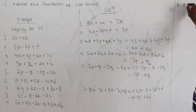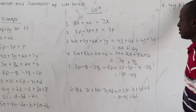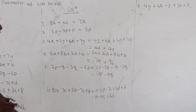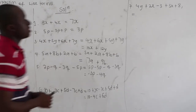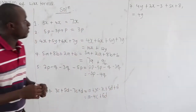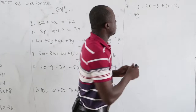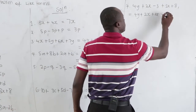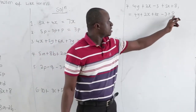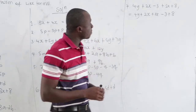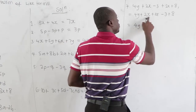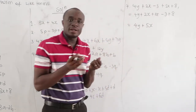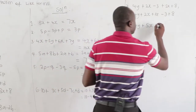Question 7: 4y plus 2x minus 3 plus 3x plus 8. We group like terms. 4y has no other y, so we write it first. Then 2x plus 3x equals 5x. The constants: negative 3 plus 8 equals 5. So the answer is 4y plus 5x plus 5.